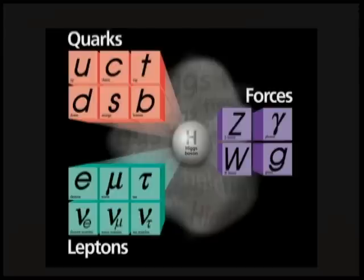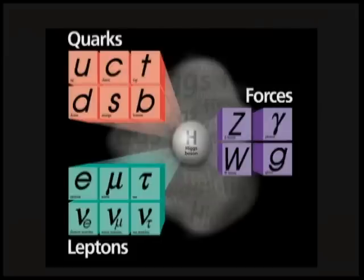We believe everything we see can be explained by just those particles — just a handful of particles. For example, all of our matter is made out of those quarks. They make up the nucleus of the atom or the electron going around it. And all the interactions — everything — all the complex stuff that gives rise to stars shining comes from those four fundamental forces: gravity, electromagnetism, the strong and weak nuclear forces.